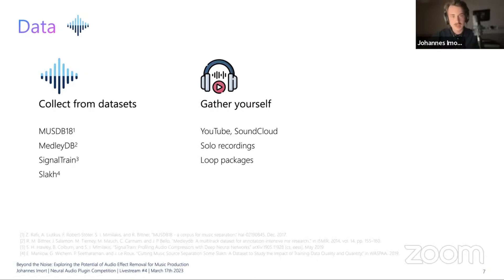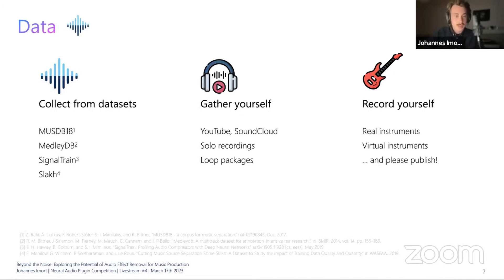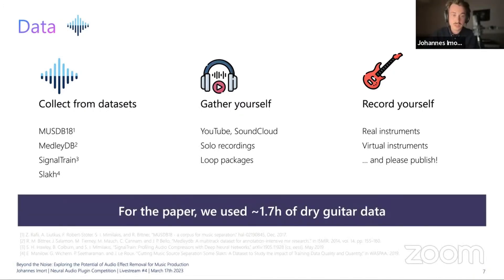It's also possible to manually gather the dry source data from different sources such as YouTube or SoundCloud. You could pick recordings of solo performances released as an album, or gather data from loop packages — which is what we did for the distortion removal paper, because we really needed dry source data. Finally, if you're a musician, you could record the data yourself, or alternatively generate it automatically using virtual instruments such as VST plugins and a MIDI database.